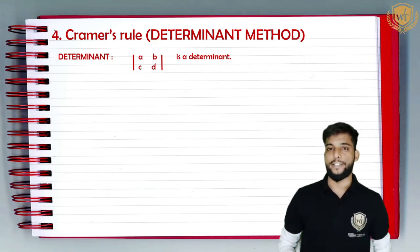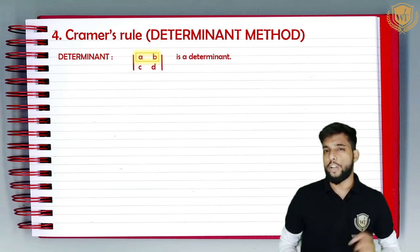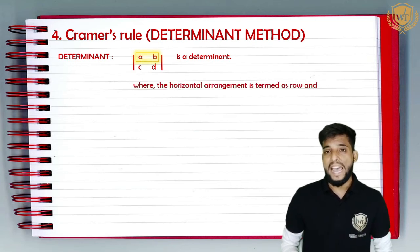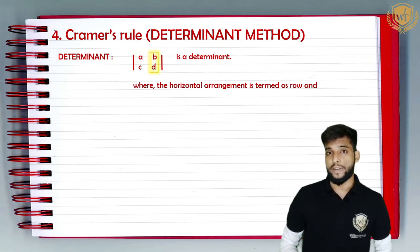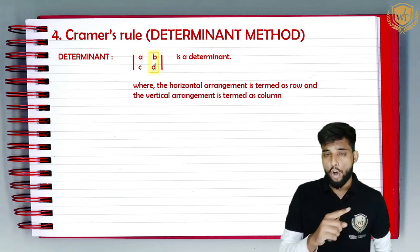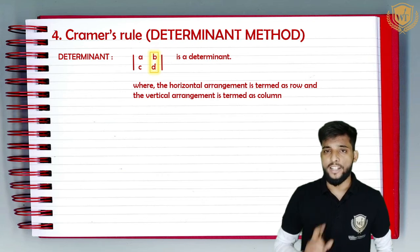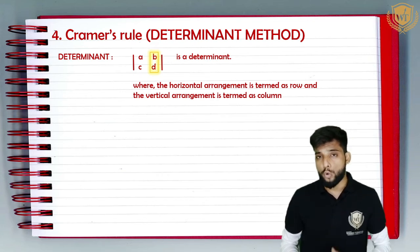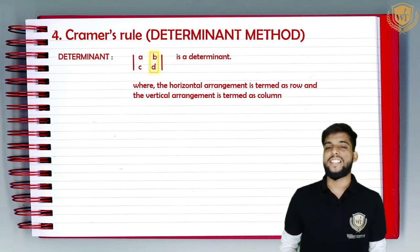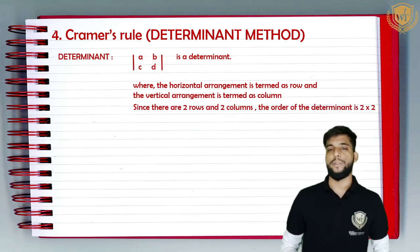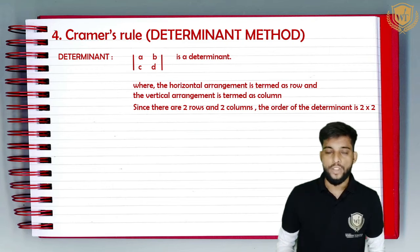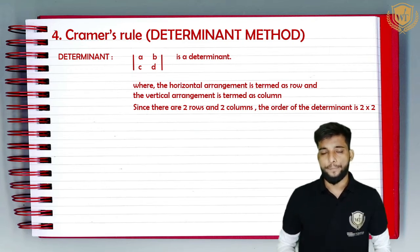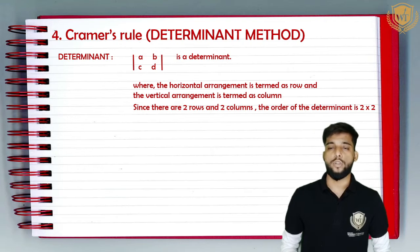The horizontal arrangement of elements is termed as a row, and the vertical arrangement is termed as a column — horizontal: row, vertical: column. Since there are two rows and two columns in this determinant, we say that the order of this determinant is two by two — two rows into two columns.